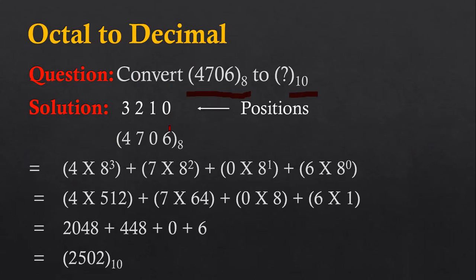Again, we have to identify the positions. The position of 6 is 0, the position of 0 is 1, the position of 7 is 2, and the position of 4 is 3. So the positions are identified.